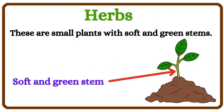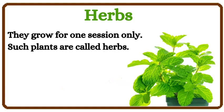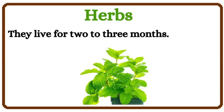Herbs. These are small plants with soft and green stems. They grow for one season only. Such plants are called herbs.